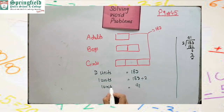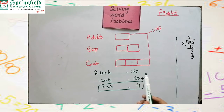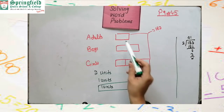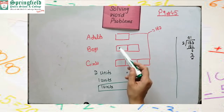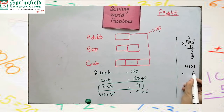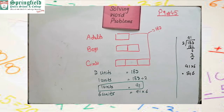One unit is equal to 91. Then how many units are here? They are asking about the total number of people at the fun fair — the total strength. We will add all the units: 1, 2, 3, 4, 5, 6 — so we multiply with 6 units. 91 multiplied by 6: 6 ones are 6, 6 nines are 54, so the total number of people at the fun fair is 546. This is your final answer.